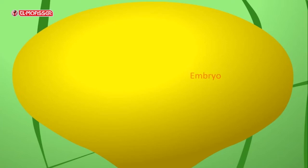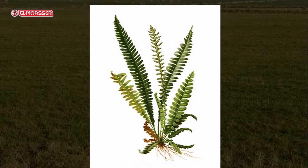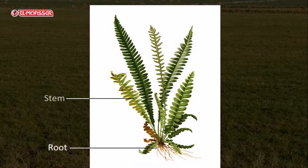The zygote divides mitotically to form a new sporophyte that grows over the gametophyte and depends on it for a short time till it develops its own roots, stem, and leaves. The gametophyte starts to degenerate while the sporophyte grows to repeat the life cycle.